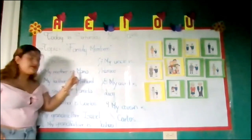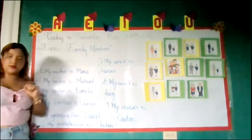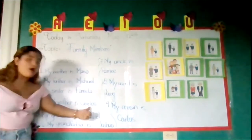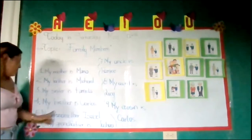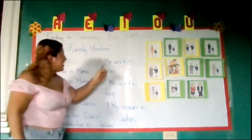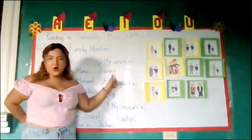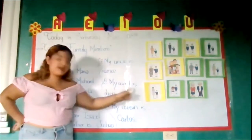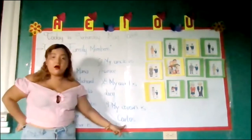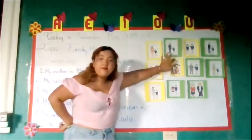Repeat with me: my mother is Maria. My father is Michael. My sister is Pamela. My brother is Carlos. My grandmother is Isabel. My grandfather is Joshua. My uncle is Romeo. My aunt is Lucy. My cousin is Carlos. Here we have the whole family — this is the main family and all the family members.